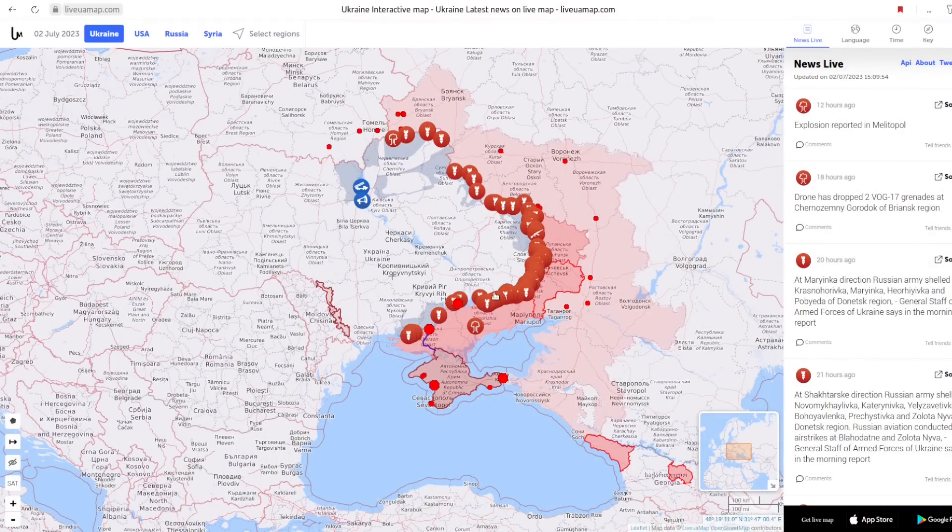Today is early July 3rd, 2023. I want to talk about the ongoing conflict in Ukraine. I want to start, as I usually do, by taking a look at the map. This is liveuamap.com, a pro-Ukrainian live map, so keep that in mind when we look at it.